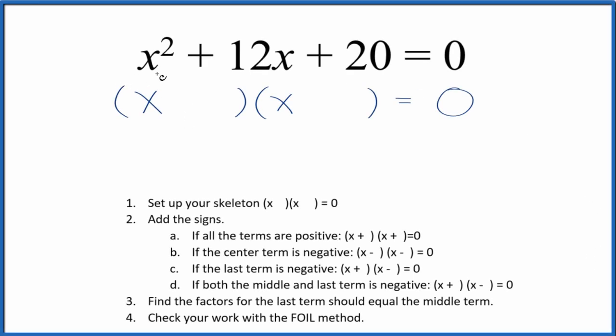If you're asked to factor the equation x squared plus 12x plus 20 equals 0, here's how you do it. First off, we'll set up a skeleton equation. We've already done that here.